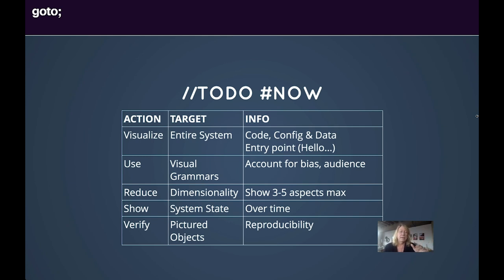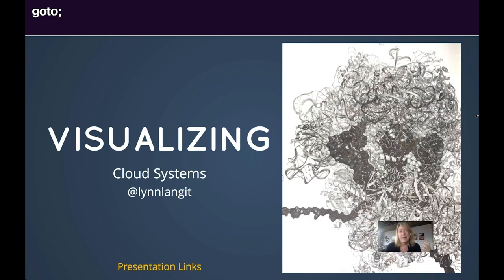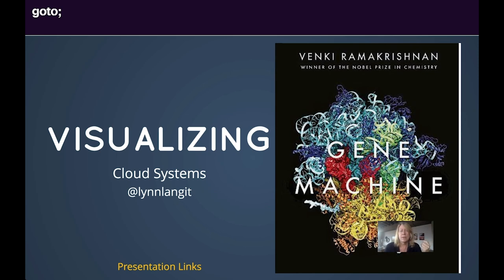Because of timing, I only covered examples in the first three of my recommendations: visualizing entire systems including entry points, using visual grammars that account for bias and audience, and reducing dimensionality. In the question period, I'll be happy to talk about examples from the show. I said I would explain the picture at the start — it's from the book Gene Machine by Venki Ramakrishnan, who won the Nobel Prize with others for creating this picture: a visualization of the ribosome. They won the Nobel Prize in Chemistry because of the importance of getting the visualization right. It's a fascinating read that helps understand how progress in visualization comes into an industry. I found it very inspirational. I'll make the slides available and I have bonus content we can talk about in the question period, covering specific services and products interesting in the cloud space for visualization. I'm Lynn Langett. Thank you.